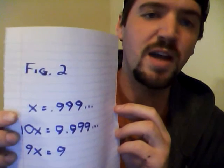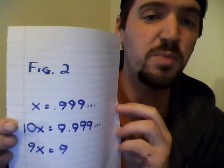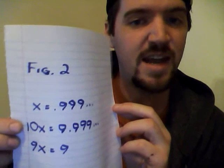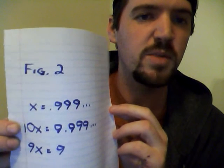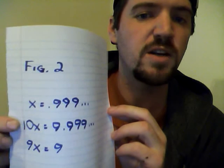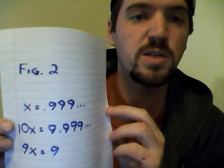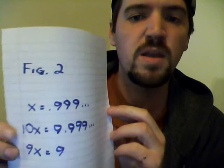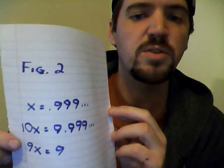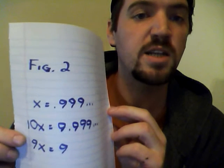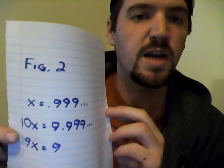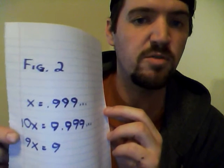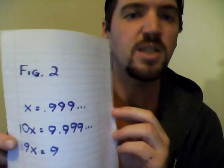x equals .9 repeating. If you multiply both sides by 10, you have 10x equals 9.999 repeating. Because all you have done is move the decimal point over one place, as you can. There is nothing wrong with that. And then you subtract x from both sides. 10x minus x is 9x and 9.9 repeating minus x, which is .9 repeating, should equal 9. But it is not.